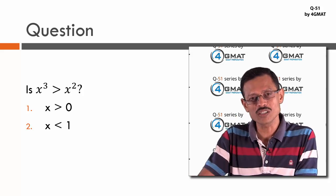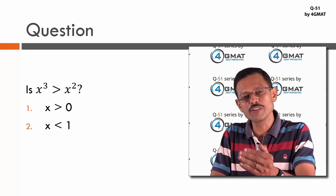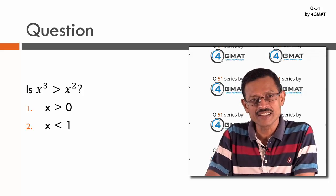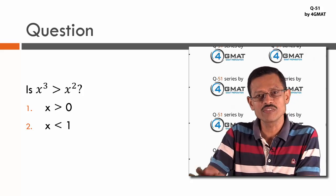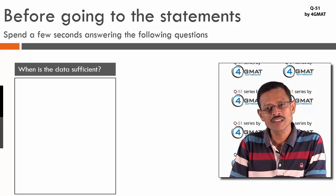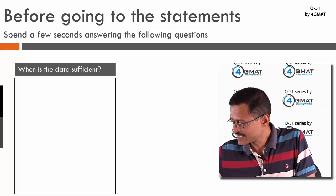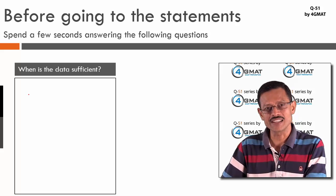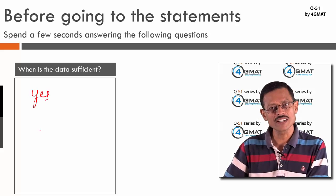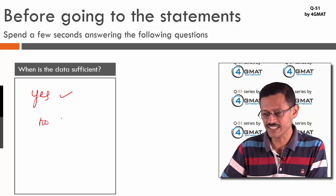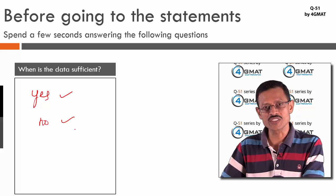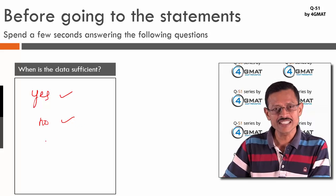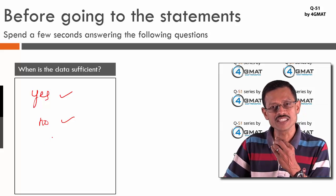I want you to spend enough time understanding the question stem before jumping into the statements. I'll look at three questions to get clarity first. The first question: when is the data sufficient? For an 'is' question, the data is sufficient if we get a definite yes or a definite no.